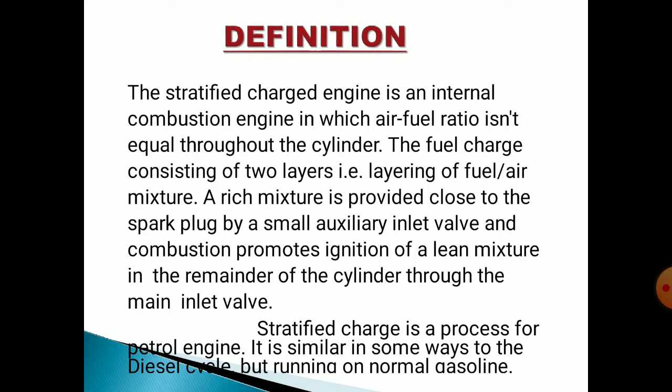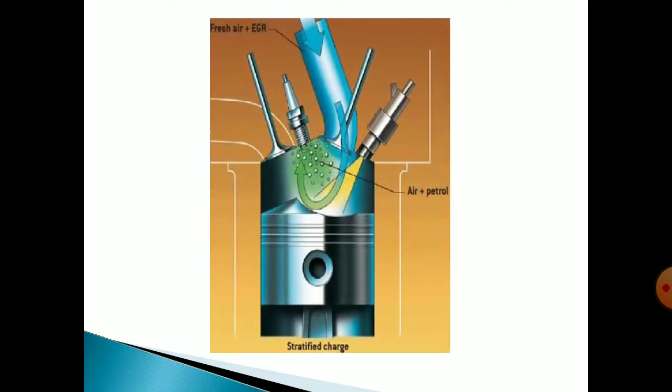In this figure you can see fresh air plus exhaust gas inlet to the intake valve, and fuel is injected via the injector. With the help of a wall-guided piston, fuel travels toward the spark plug, and a rich mixture is available near the spark plug. When the spark is produced, fuel is burnt and we get the power.